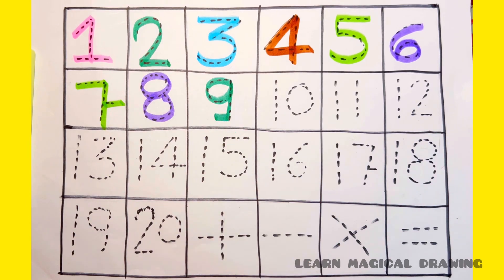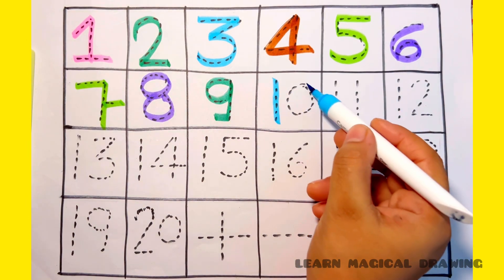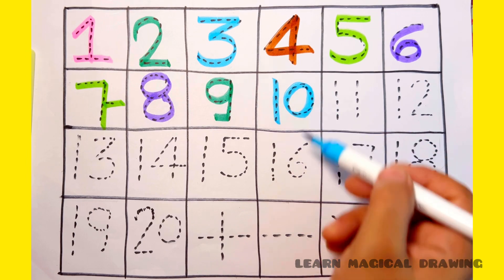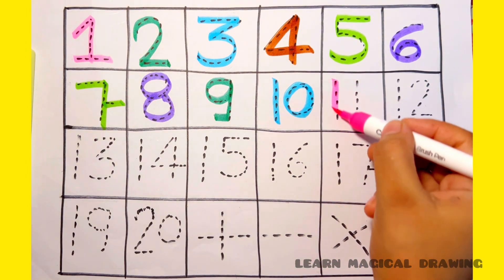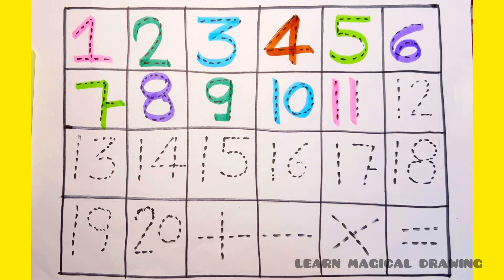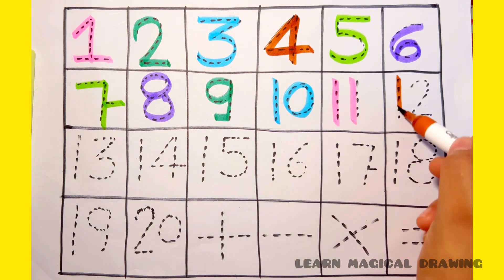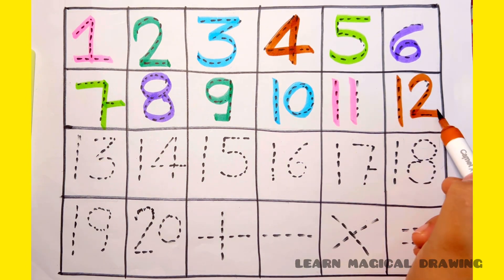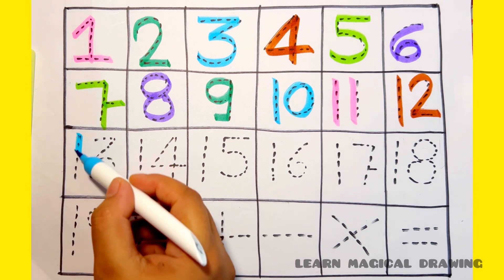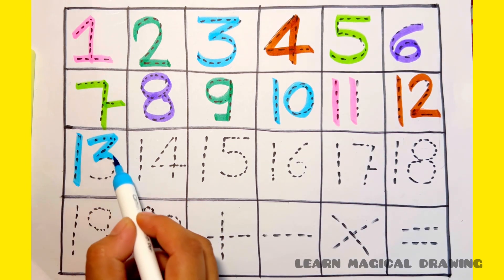One, zero, ten. One, one, eleven. One, two, twelve. One, three, thirteen.